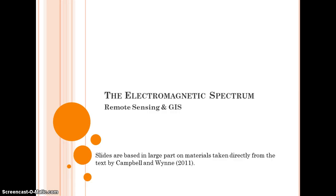This video lecture addresses the electromagnetic spectrum. Slides are based in large part on materials taken directly from the text by Campbell and Wynne, 2011. As Campbell and Wynne, 2011, page 31 note, interpretation of remote sensing imagery depends on a sound understanding of electromagnetic radiation and its interactions with surfaces and the atmosphere.